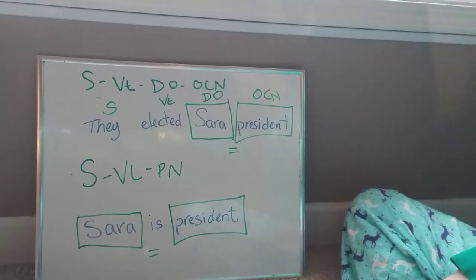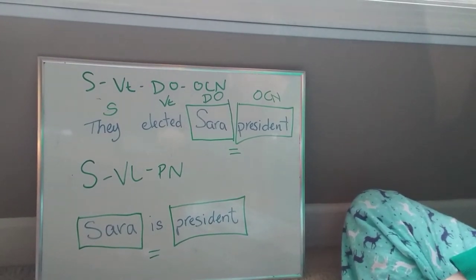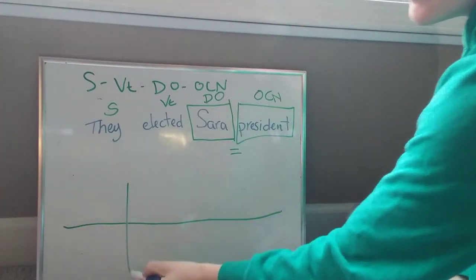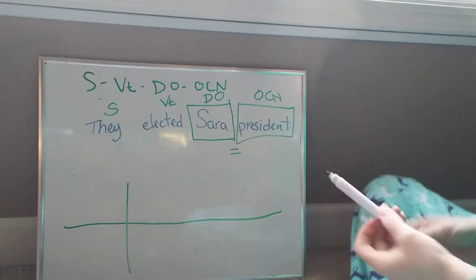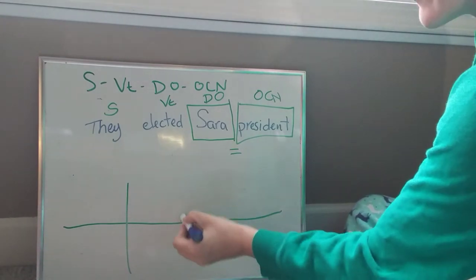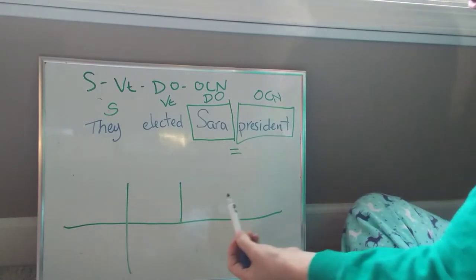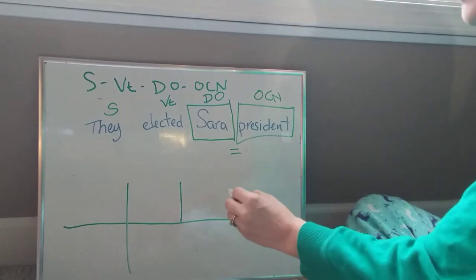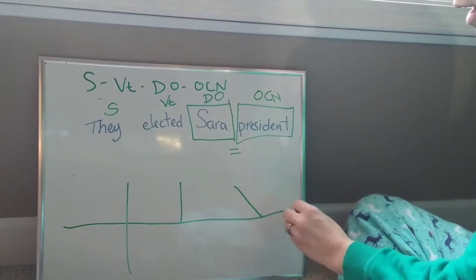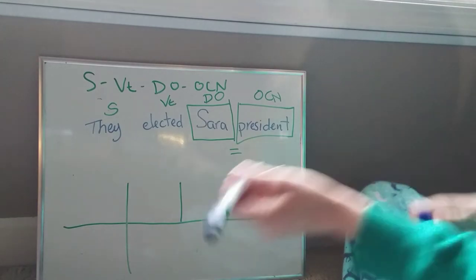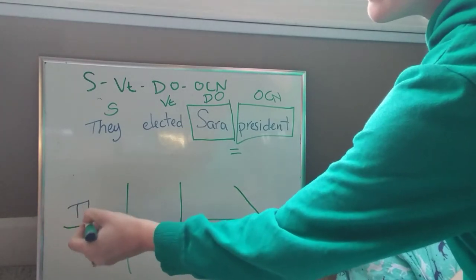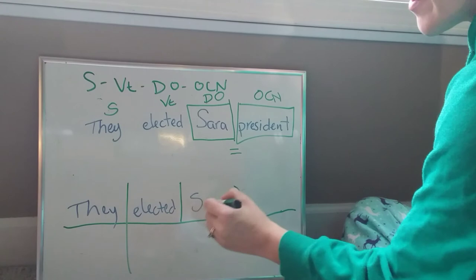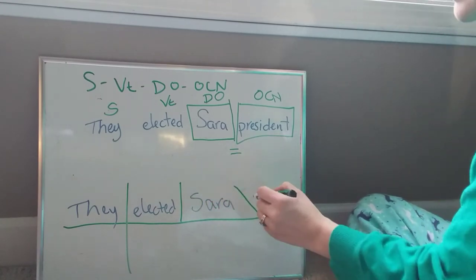The O-C-N will also always come after the direct object. So we're going to diagram this one really quick. Here's the line that divides subject from predicate. We're going to have a vertical line dividing the verb from the direct object. And then just like in the SVL-PN sentence pattern, it reflects back, so this line is going to be angled. Then we can just fill it in: subject is 'they,' verb is 'elected,' direct object is 'Sarah,' O-C-N is 'president.'